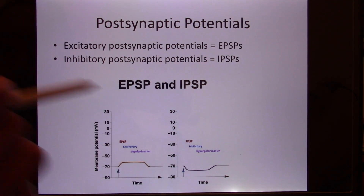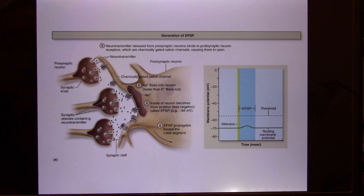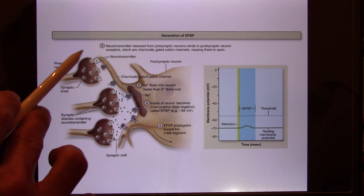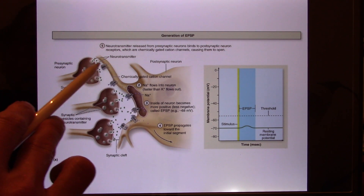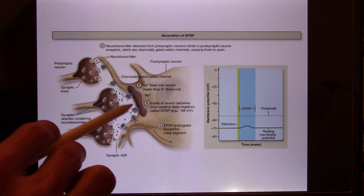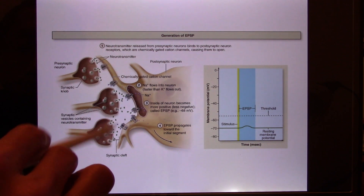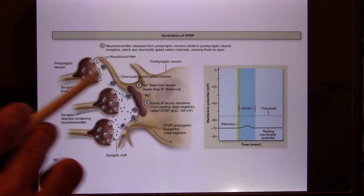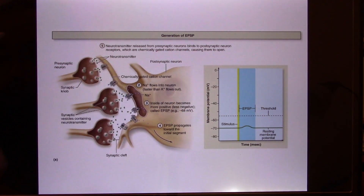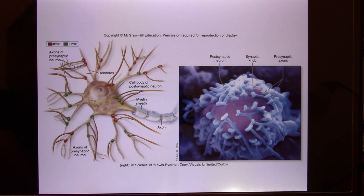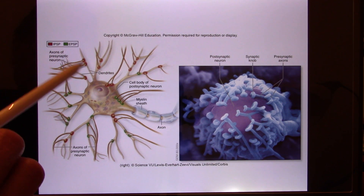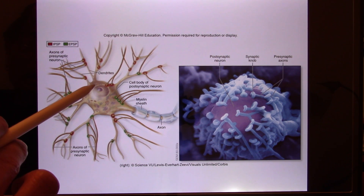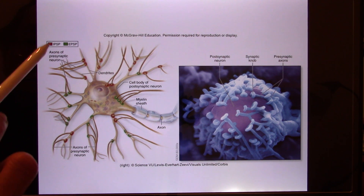These two potentials happen in the synapse. You find that neurons have a lot of synapses — other neurons want to talk to this neuron and release neurotransmitters. Most of them produce EPSP by opening ligand-gated sodium channels, making the inside more positive. But some of them can release GABA, and GABA can open the chloride channel. When more GABA is released, more chloride flows in, the inside becomes more negative — this is called the IPSP, inhibitory post-synaptic potential.